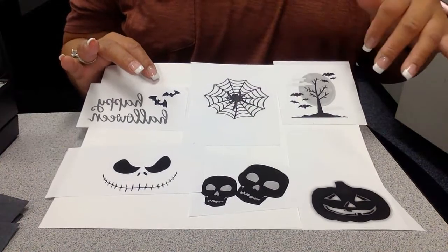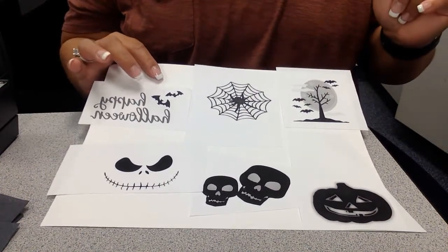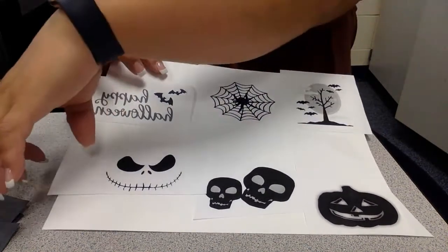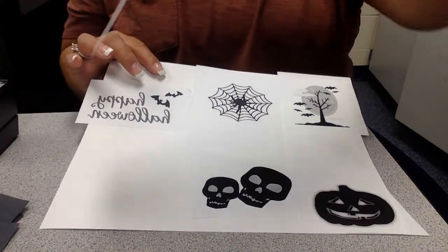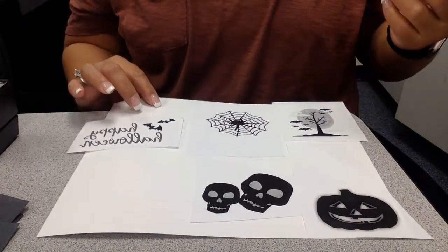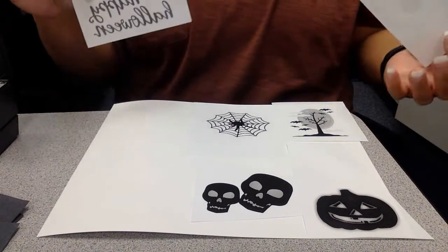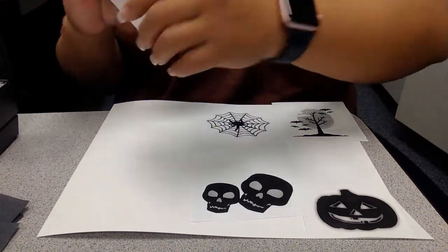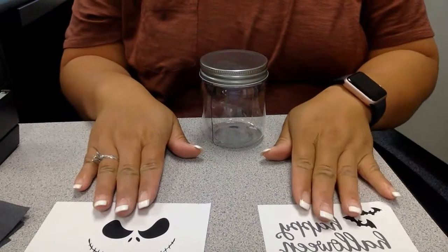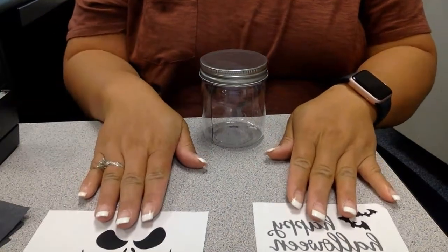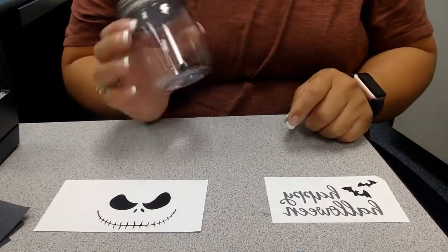The templates you should have got look like this. For me, I will possibly pick out this one because my kids like Jack and I might go ahead and do this one too that says Happy Halloween on the other side of my mason jar.